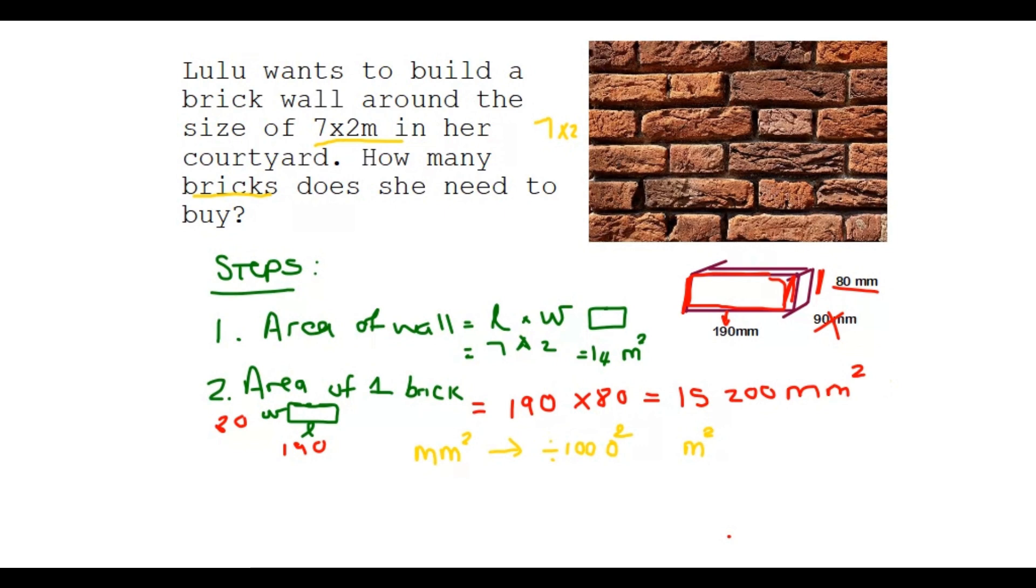So let's change the 15,200 millimeters squared. Put it in your calculator. Divided by a thousand squared. And you will get an answer of 0.0152. And it will be, like we said, meters squared.